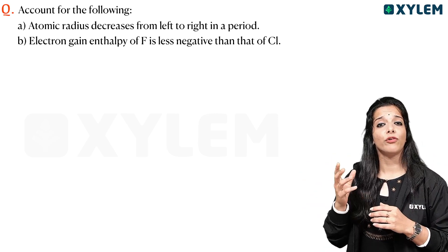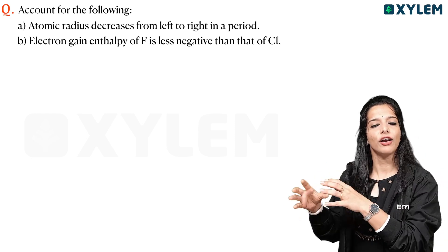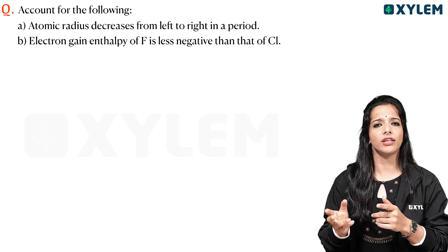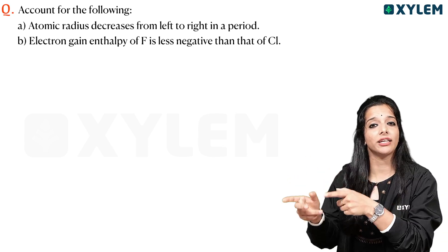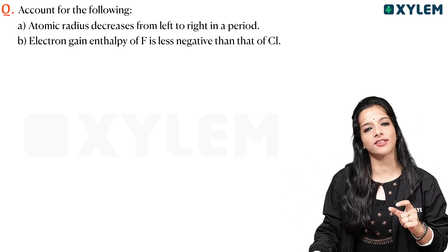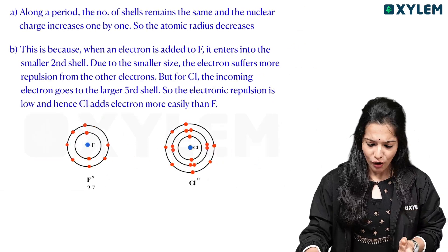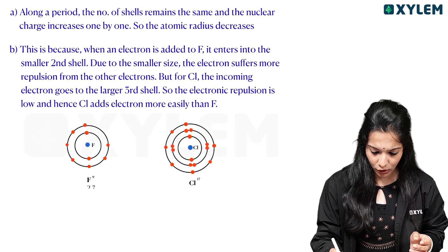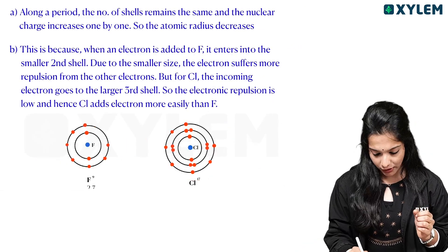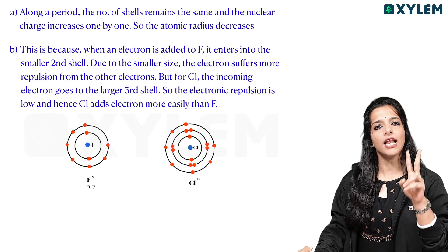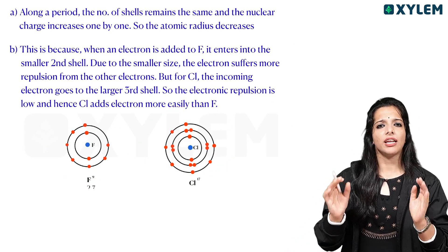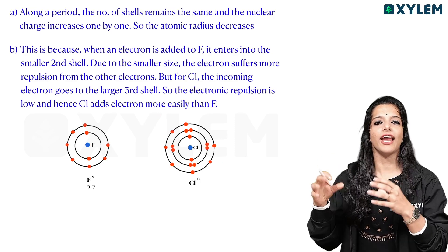Electron gain enthalpy of fluorine is less negative than that of chlorine. If we look at fluorine and chlorine and take a look at the atomic model: fluorine has two shells, chlorine has three shells. So what does electron gain enthalpy mean?